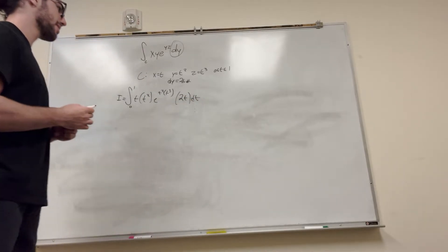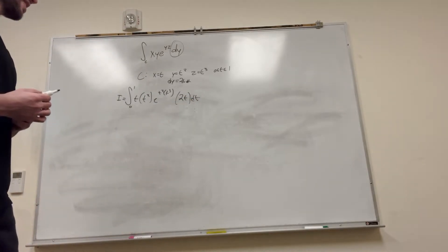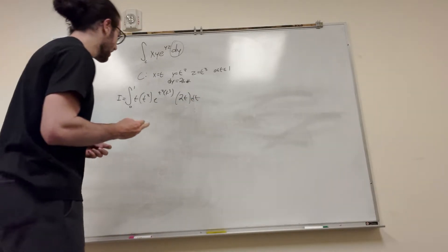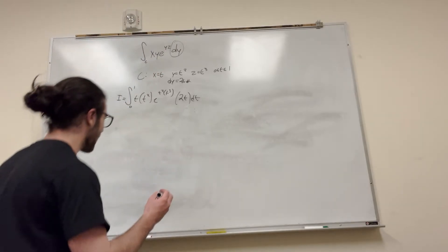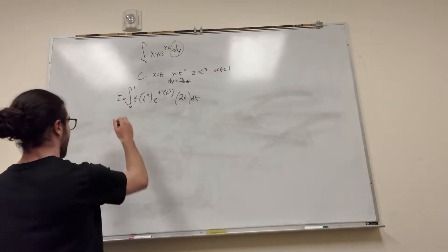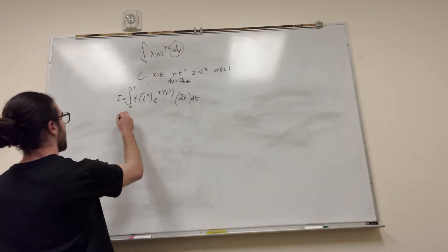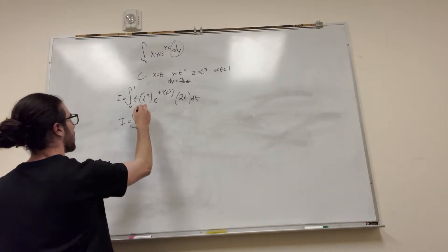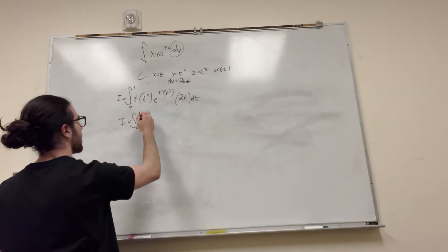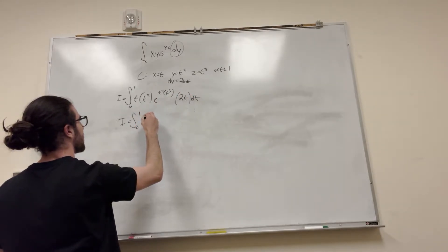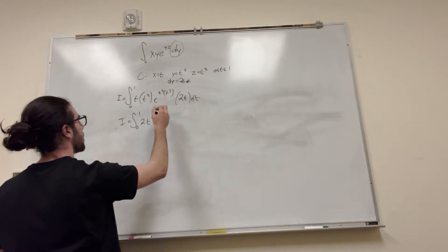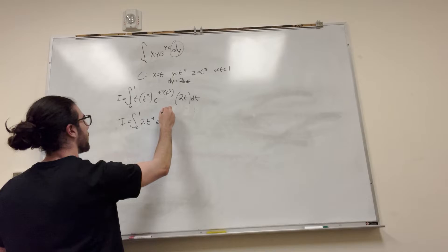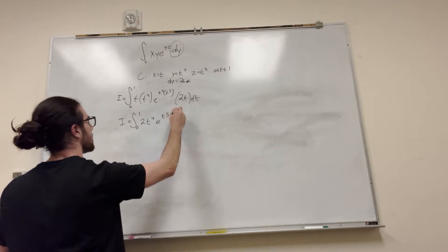Now we're looking at this and we can simplify it. It's equal to the integral from 0 to 1. All of the t's come together to make 2t to the fourth, and then it's going to be e to the t to the fifth, dt.